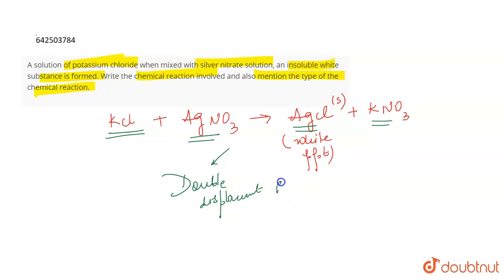This is a double displacement reaction because the exchange of ions has taken place. That is why the type of the reaction is double displacement. That's all for the question.